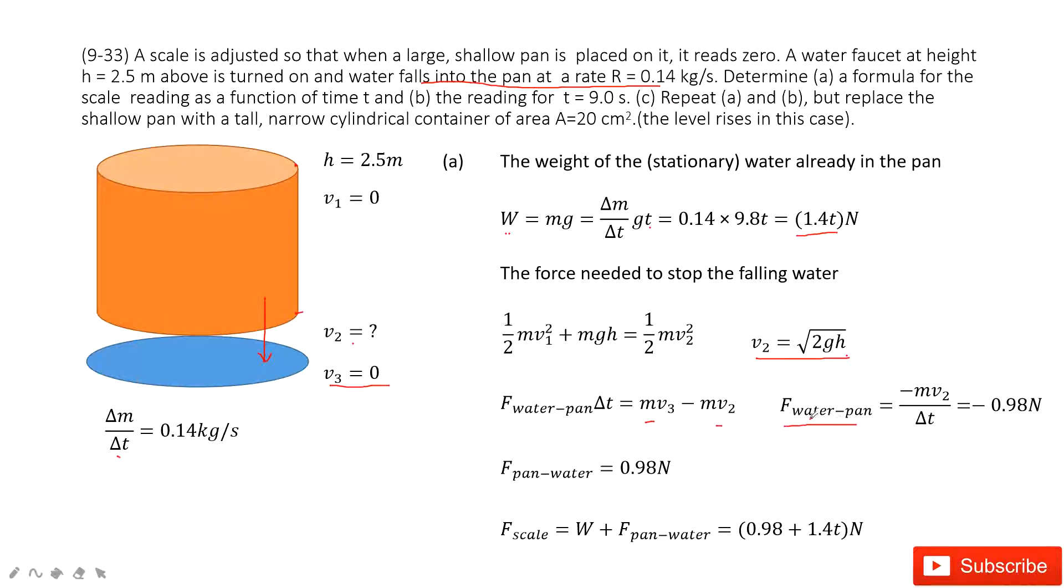And then we can say v₃ is zero and v₂ is given, so we can get the force the water acts on the pan. As Newton's third law, we can get the force the pan acts on the water is just equal in magnitude but opposite in direction. So this force is found.